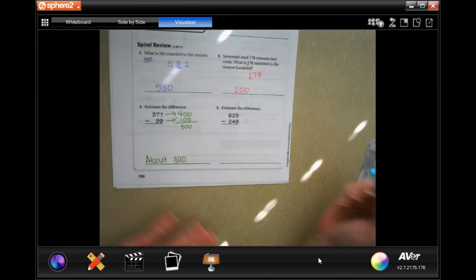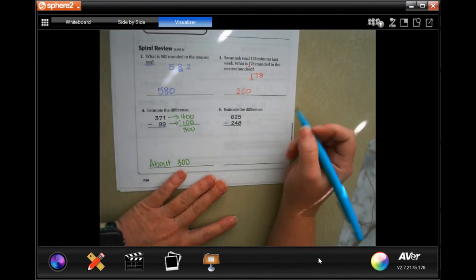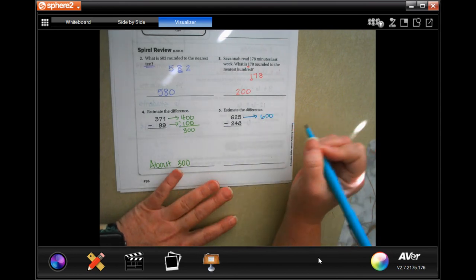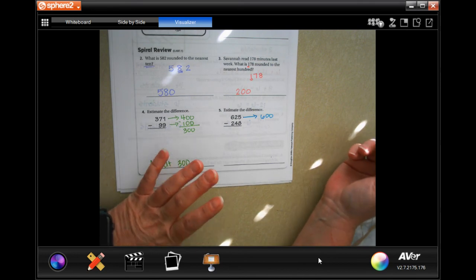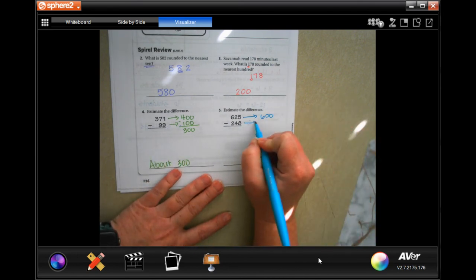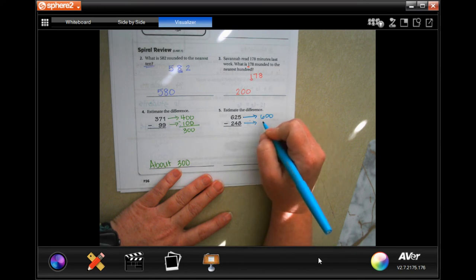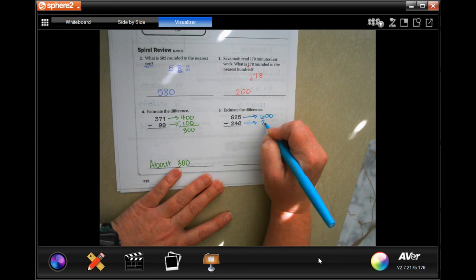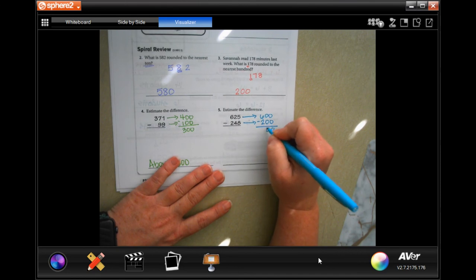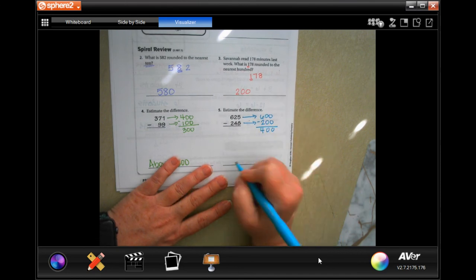Estimate the difference. 625 you can round that to 600, you can also round it to 650, not going to change anything, we're good. 248, I think we're going to round that to 200 because it's closer to 200 than it is to 300. Six minus two is four, so about 400.